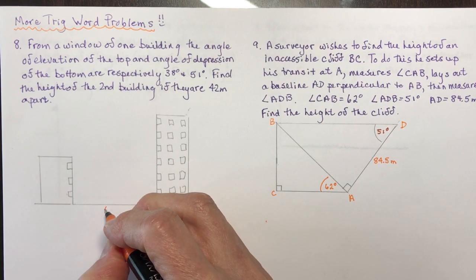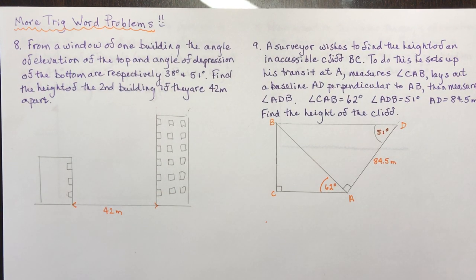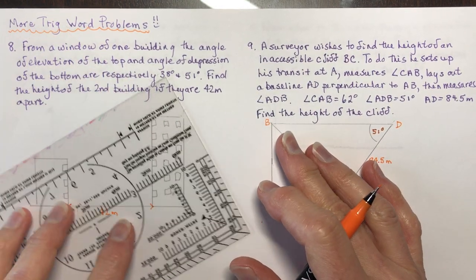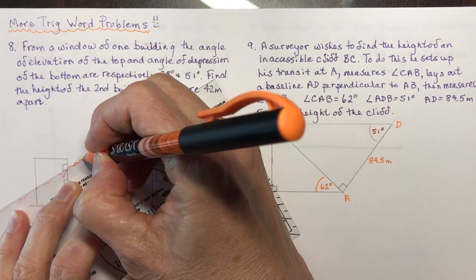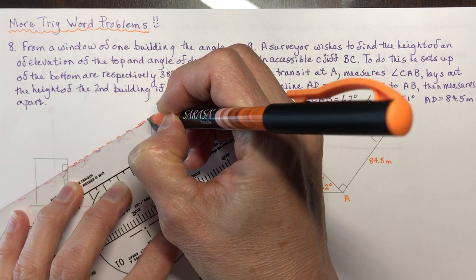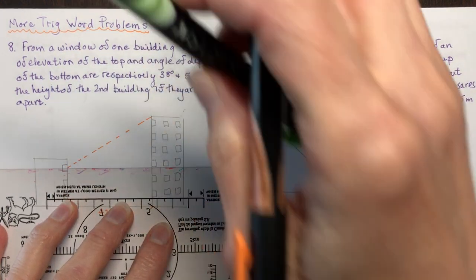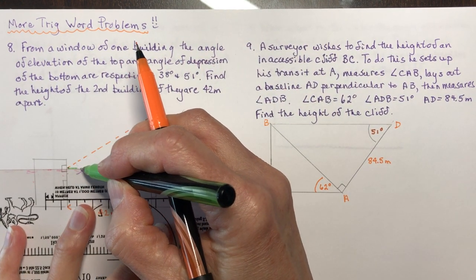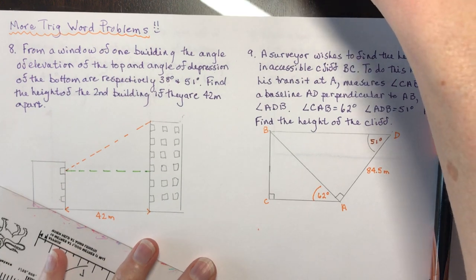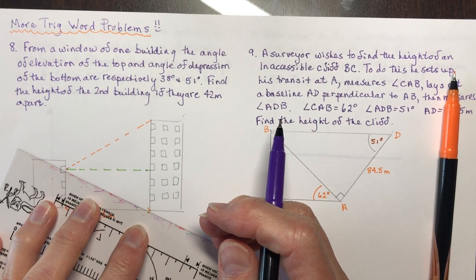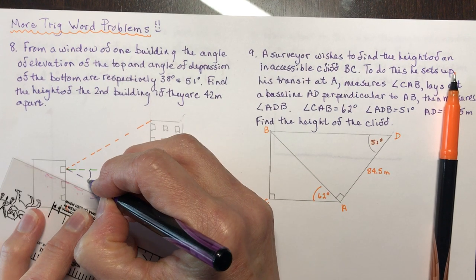We have a couple of angles to work with. We know right away that this is 42 meters from here to here. It says from a window of one building, so we measure to the top of the other building. When doing angles of elevation and depression, you need a sight line — that's this horizontal line straight across to the ground.